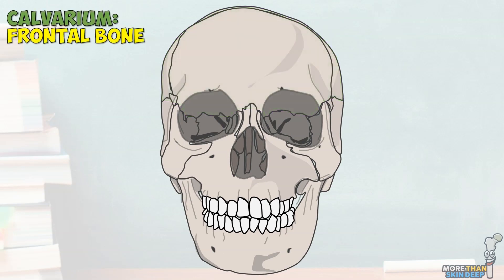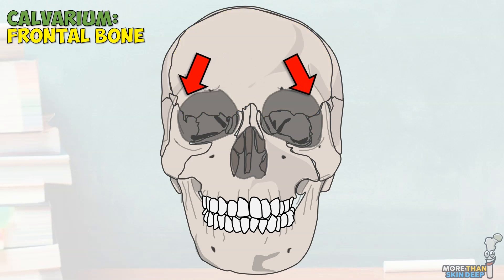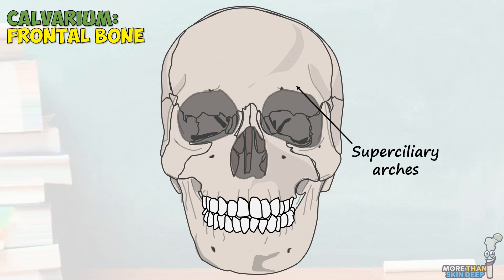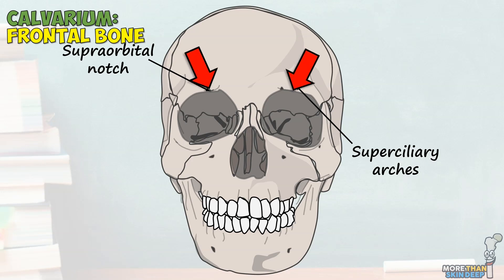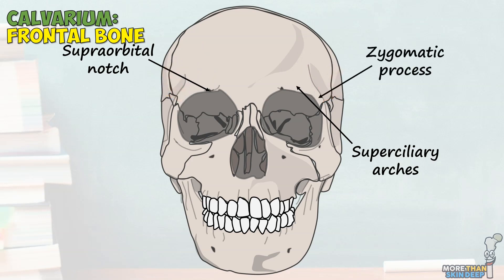The most anterior of these is the frontal bone, which produces the forehead as well as part of the nasal bridge and the superior part of the orbit, or eye socket. This prominence just above each orbit is known as the superciliary arch and is approximately where your eyebrows sit. You may also notice this small indentation just on the cusp of the orbit, known as the supraorbital notch, which makes way for the supraorbital nerve, artery, and vein. The frontal bone has bony ridges that project laterally to connect to the zygomatic bones in your cheeks — these are known as the zygomatic processes.